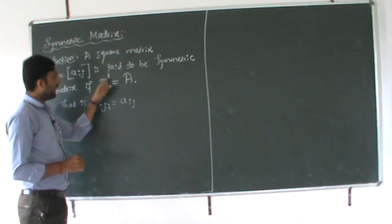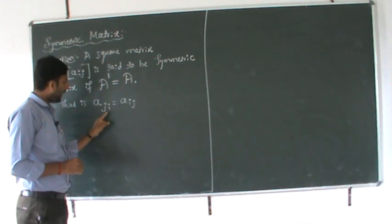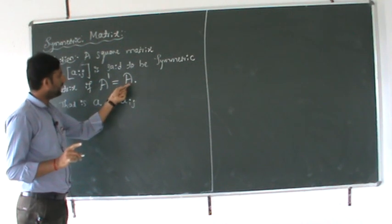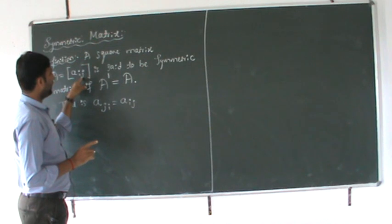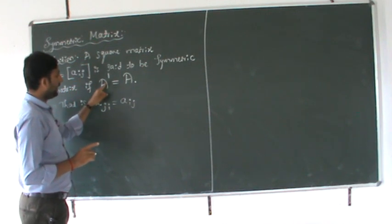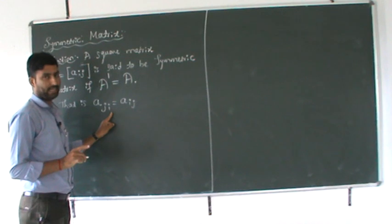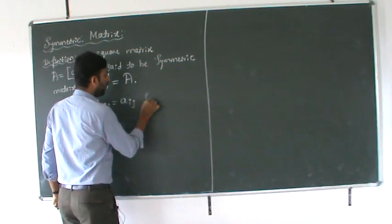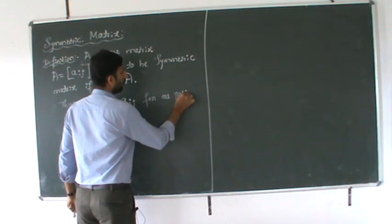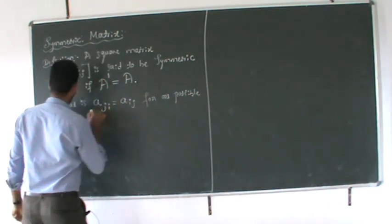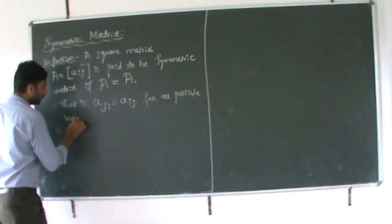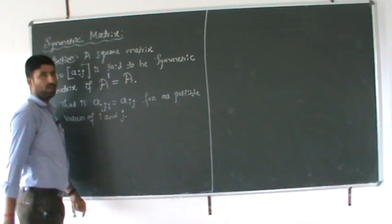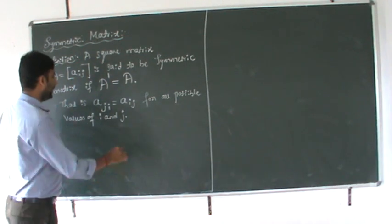That is, Aji is equal to Aij. What is A dash? The elements of A dash are Aji, which should be the same as the elements Aij, for all possible values of i and j.